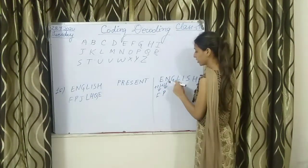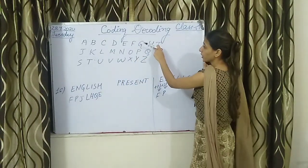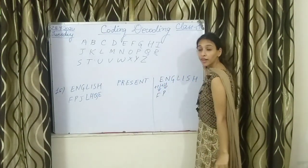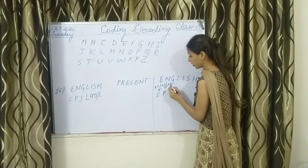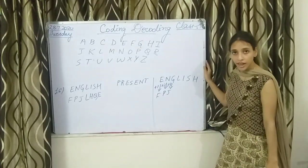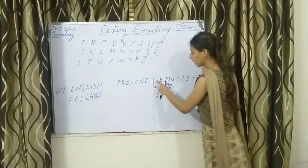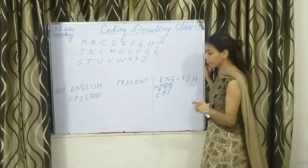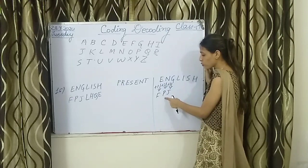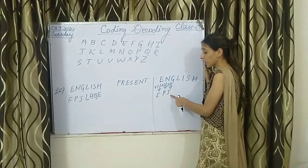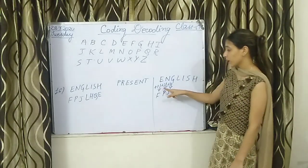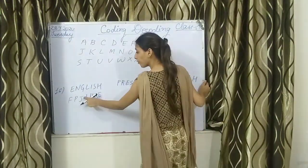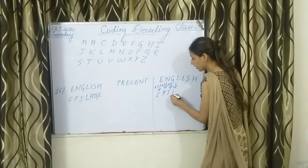After that, L is written the same — meaning zero is added, nothing is added. Then for I, the code is H — H comes before I, meaning minus one is applied. So from here, it has started decreasing.